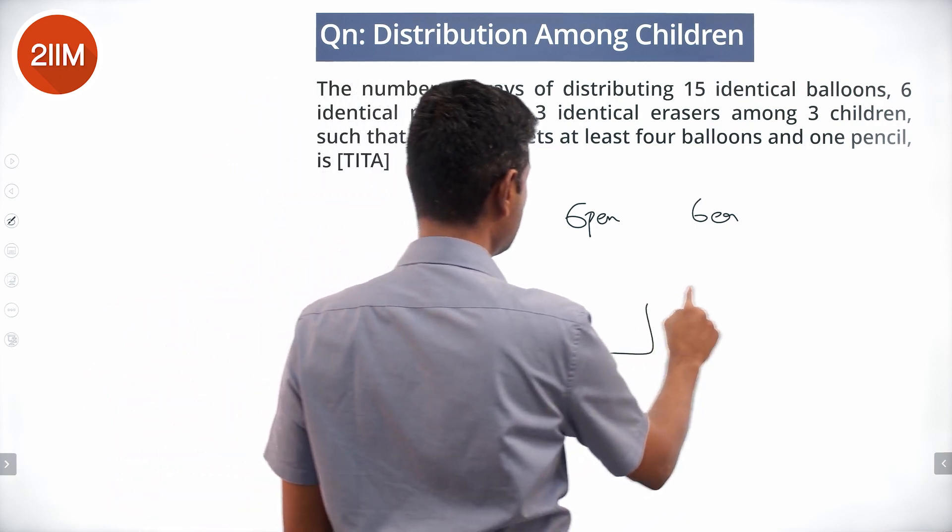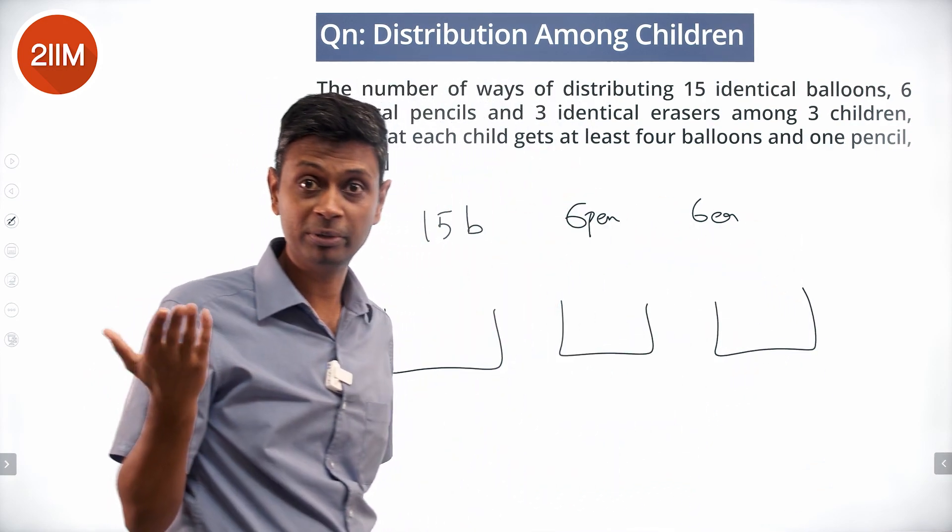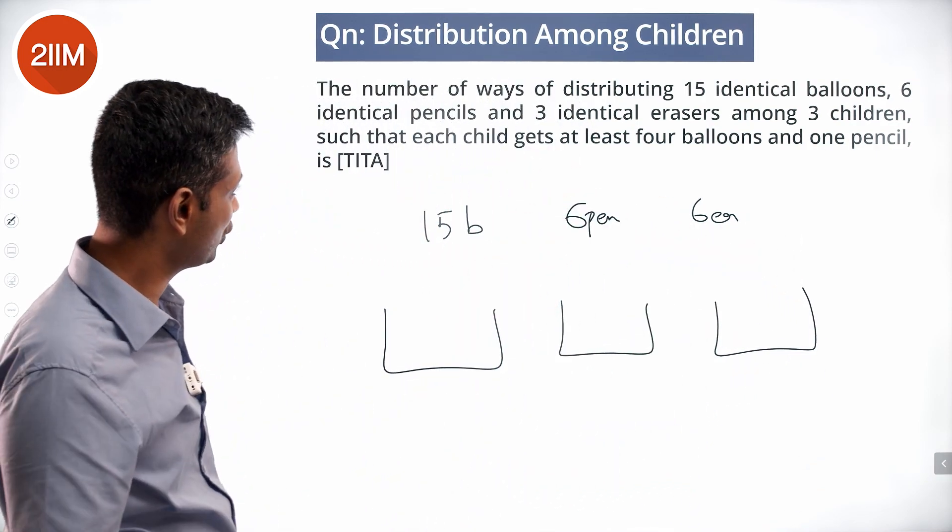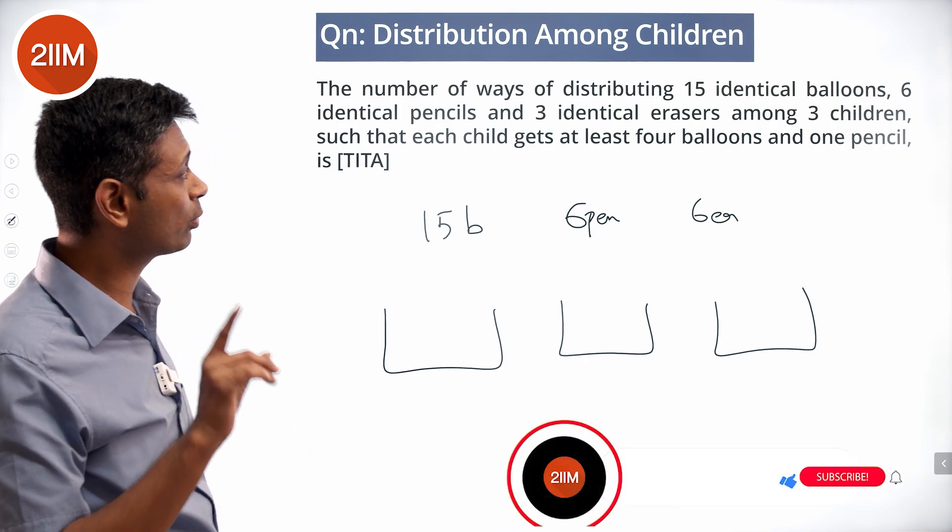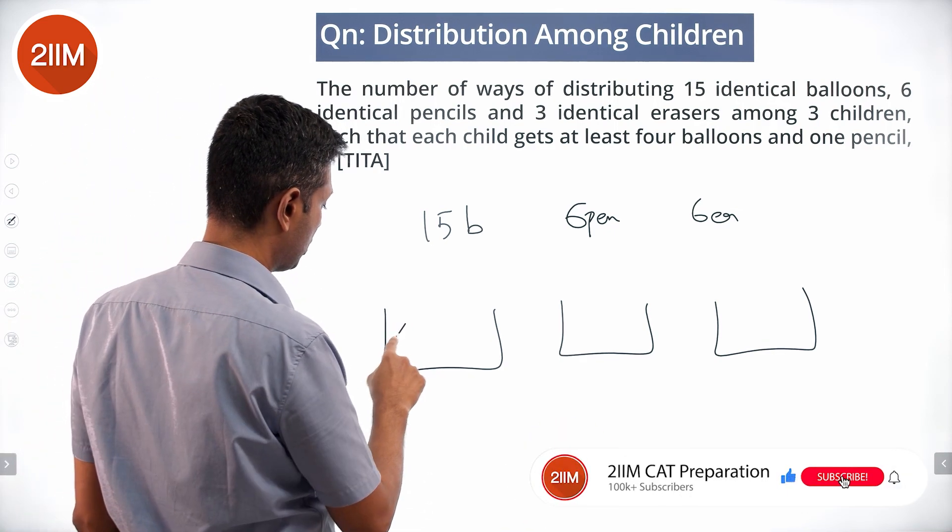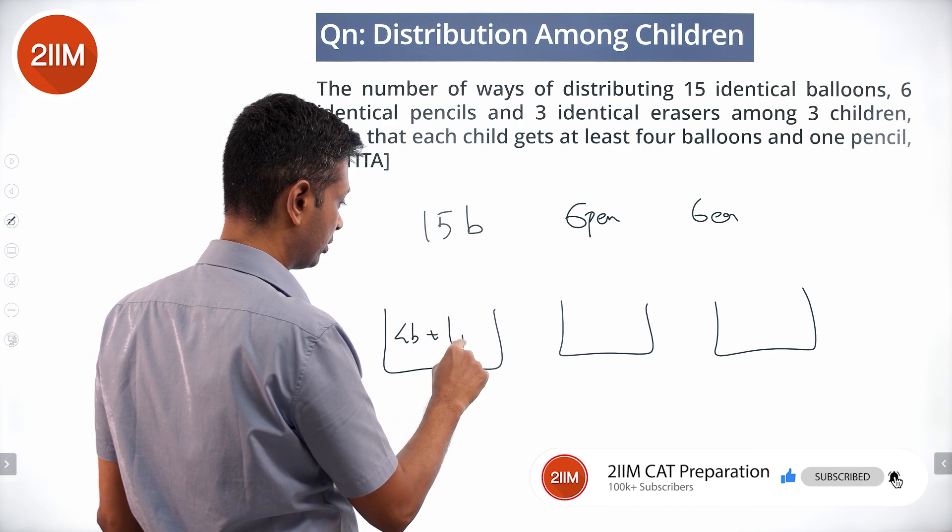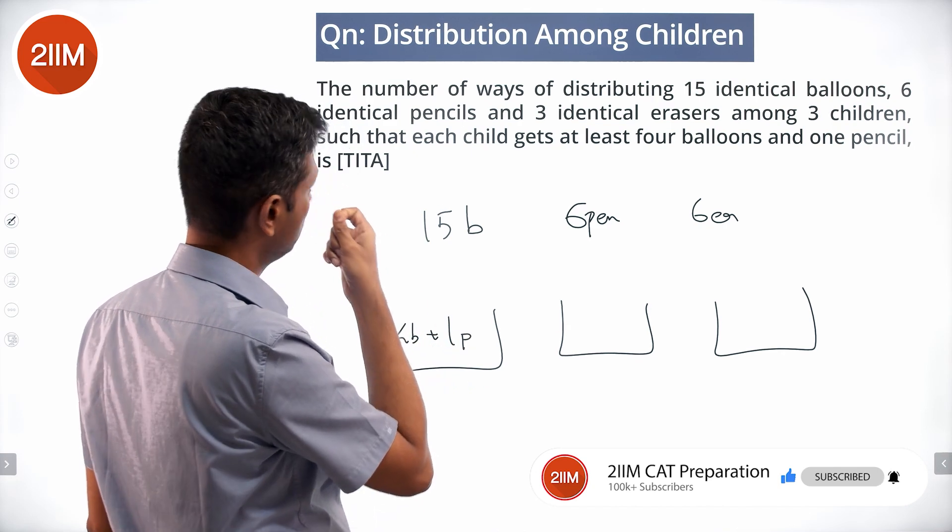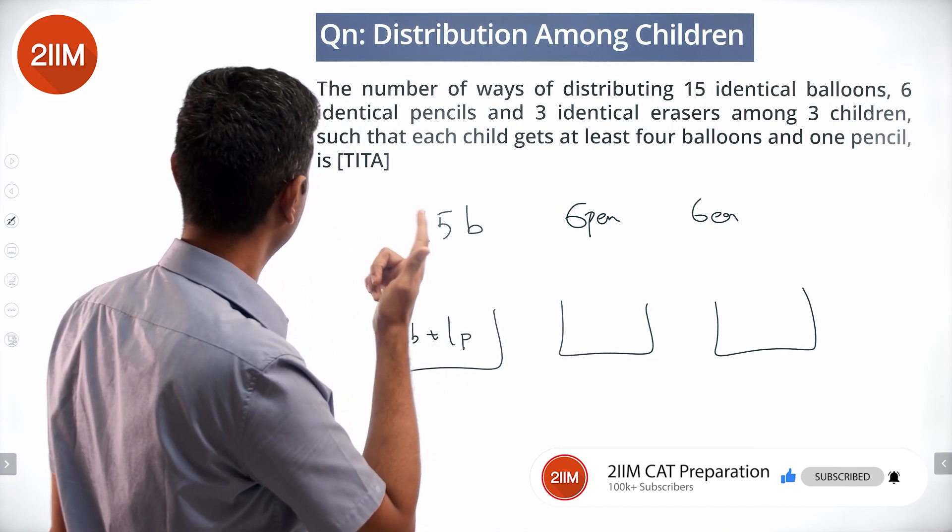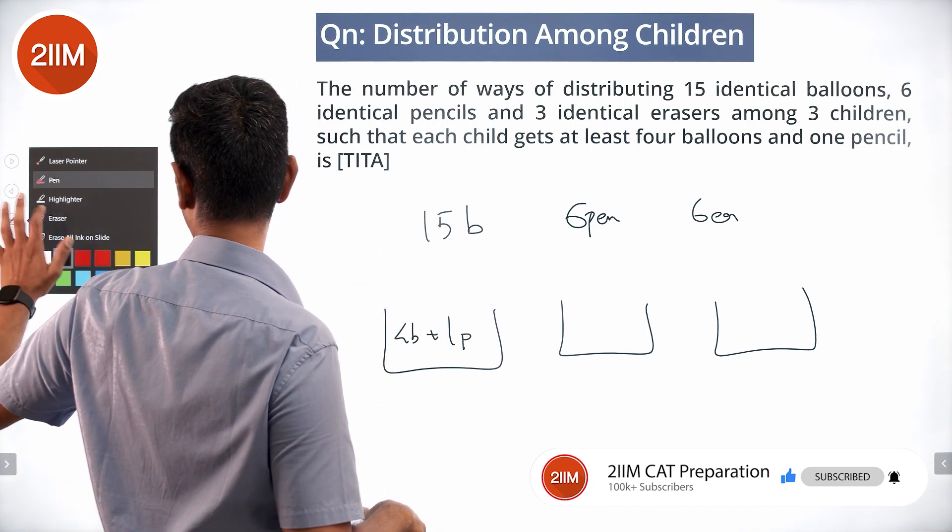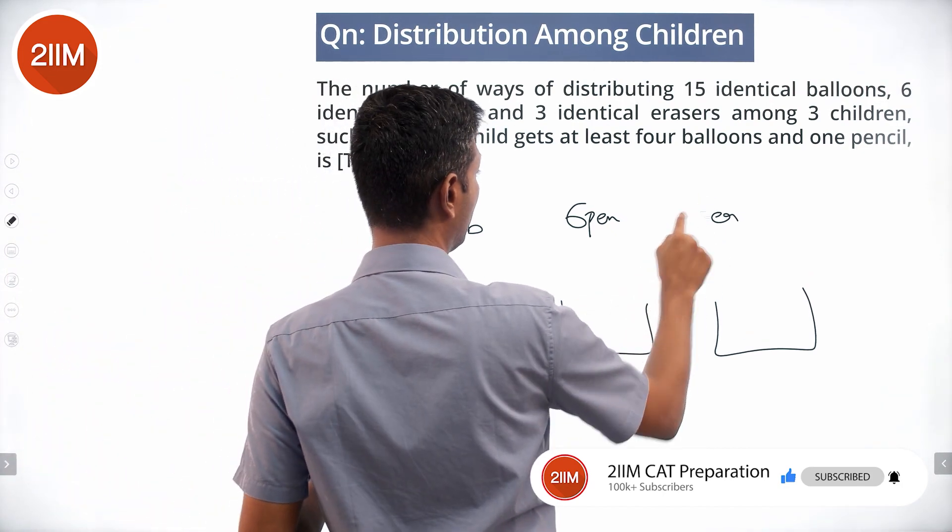Obviously not identical children, that would be brilliant. Such that each child gets at least 4 balloons and 1 pencil. So 6 identical pencils and 3 identical erasers, sorry about this, I will erase this.